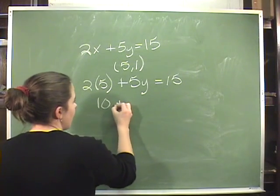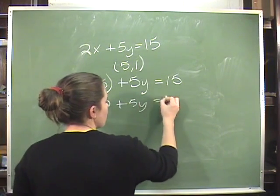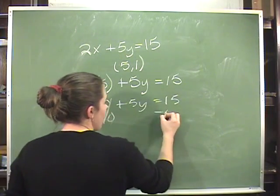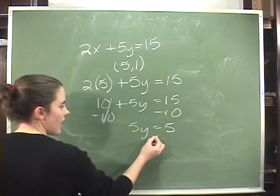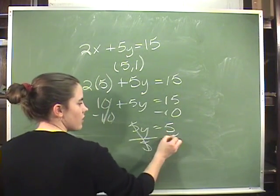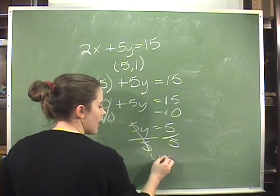2 times 5 is 10 plus 5y equals 15. Subtracting 10 from both sides, I end up with 5y equals 5. Dividing both sides by 5, I end up with y equals 1.